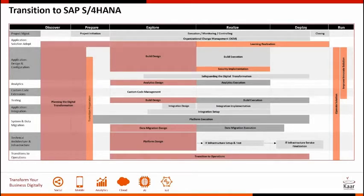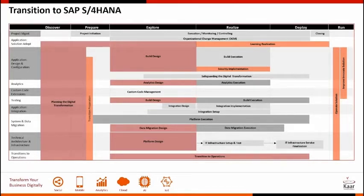Technical architecture and infrastructure involves setting up your data center for on-premise deployments, setting up all related processes, and considering connectivity to the SAP Cloud Platform. If you're hosting on AWS, Azure, GCP, or another cloud provider, you ensure connectivity to that data center as well. Transition to operations covers how the project team will hand off all knowledge to the operations team post go-live, putting tools and a knowledge database in place before you go live.